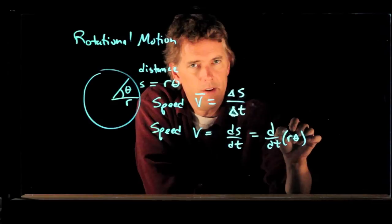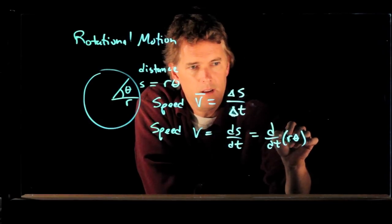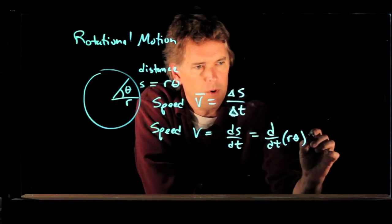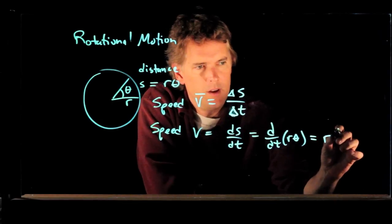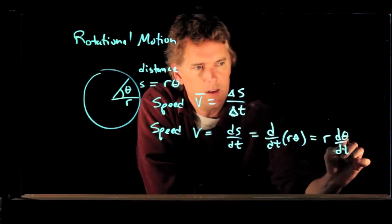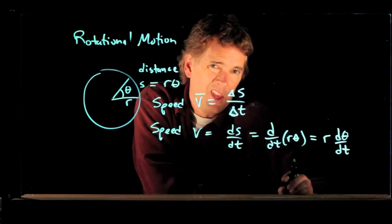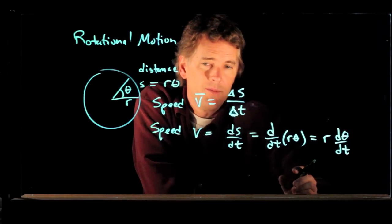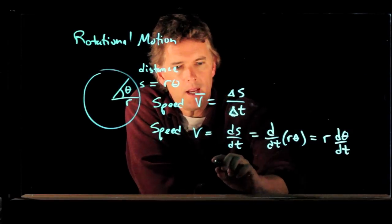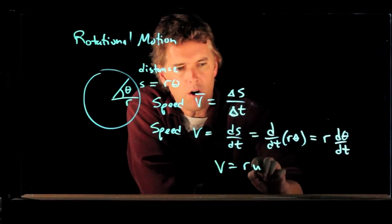If I take the derivative of R theta, R doesn't change. I can pull that out of the derivative. But theta is changing, so we can write it like that. R times d theta dt. What's d theta dt? D theta dt is omega. So V equals R omega.